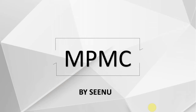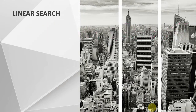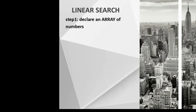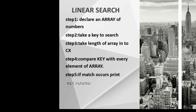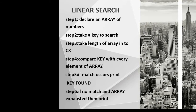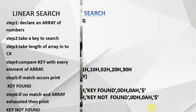Welcome to another session of MPMC programming. Today's topic is implementation of linear search. A linear search is searching for a given element in a list of elements. The logic is: declare an array of numbers, take a key to search, take the length of the array into register CX, compare your key with every element of the array. If a match occurs, print 'key found'. If no match and the array is exhausted, print 'key not found'.